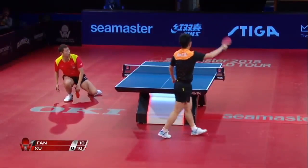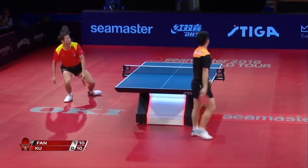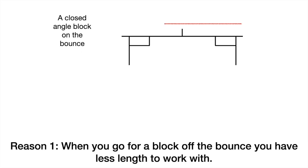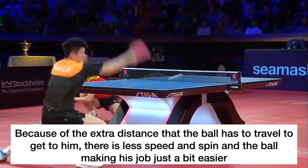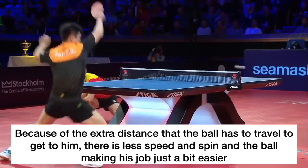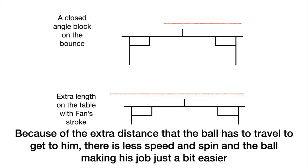Let's take a closer look. Reason 1: when you go for a block off the bounce, you have less length to work with. In Fan's stroke, not only does he get a much safer length to work with, because of the extra distance that the ball has to travel, the spin and the speed also reduce just a little bit, in order to make his task a little easier.